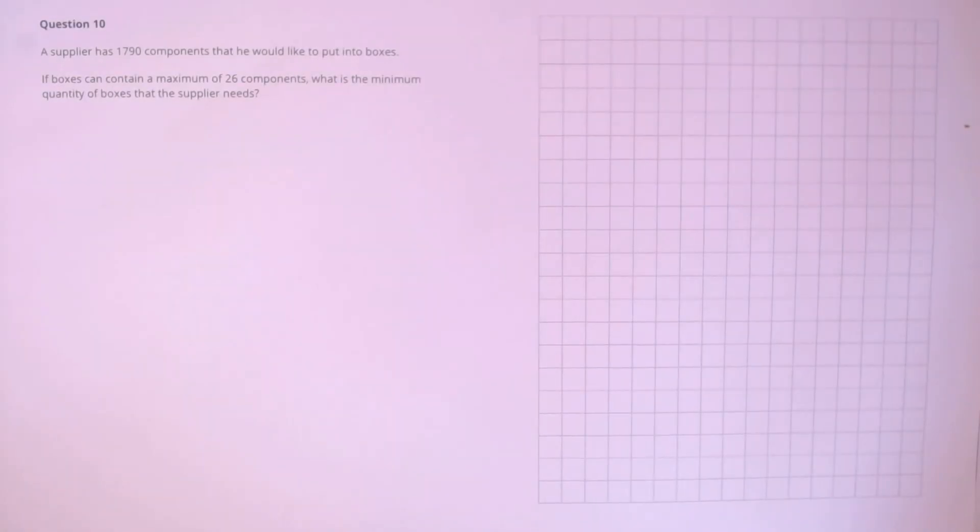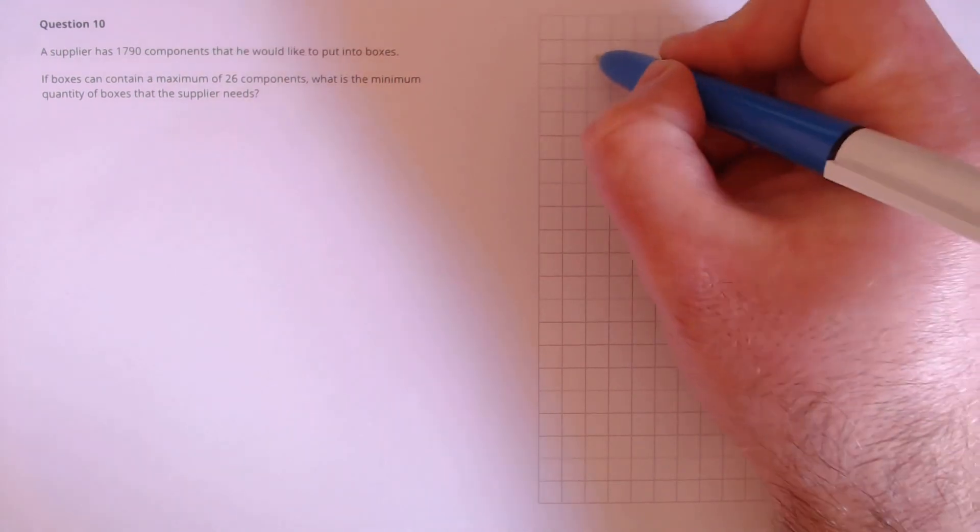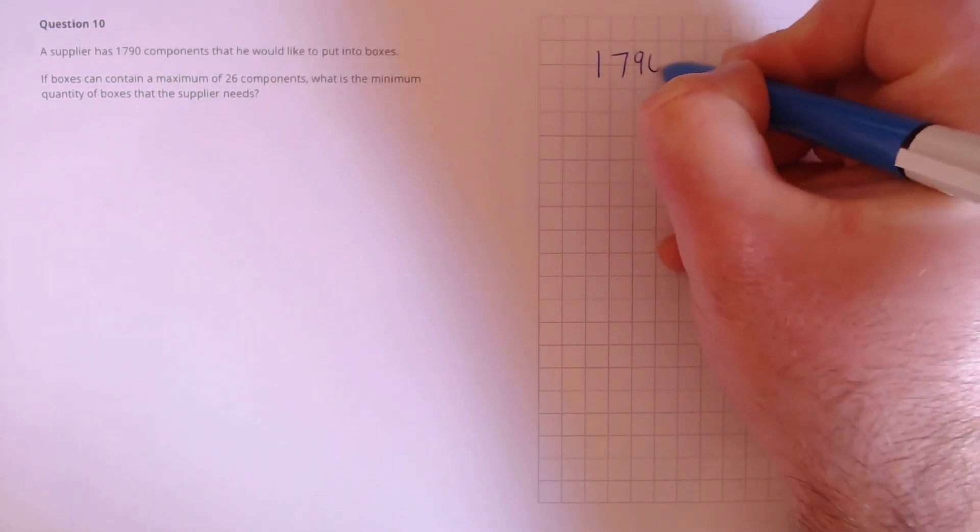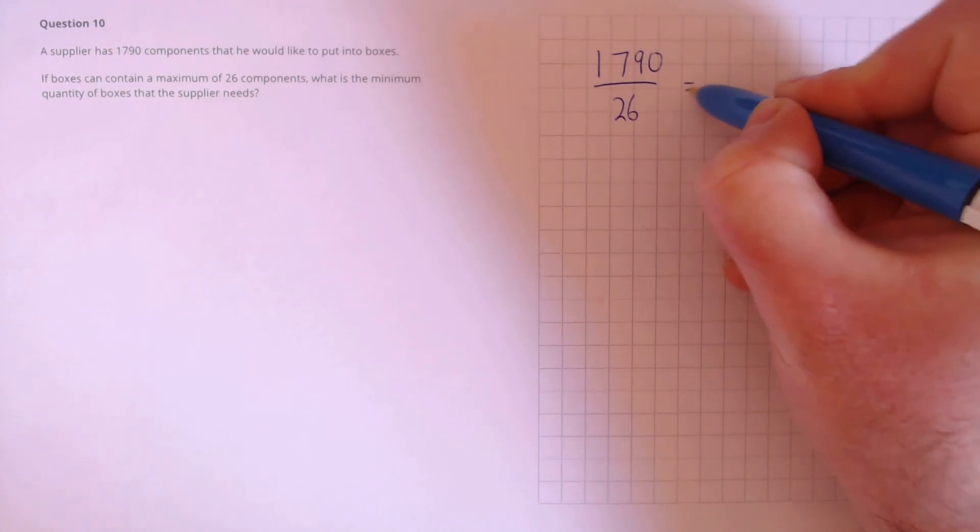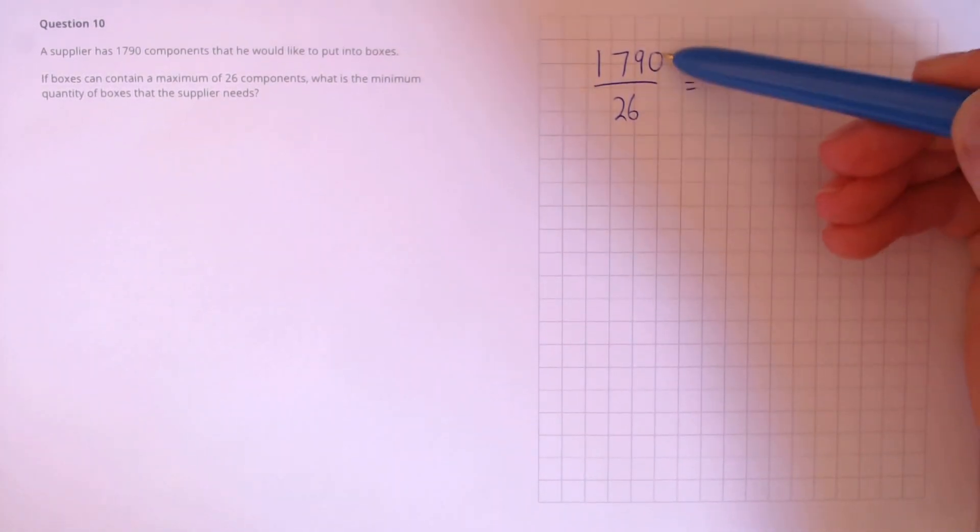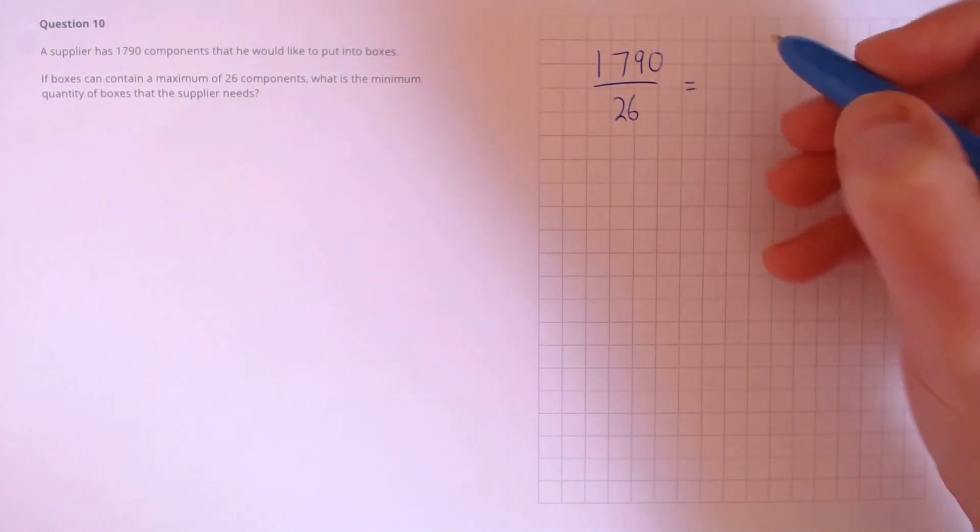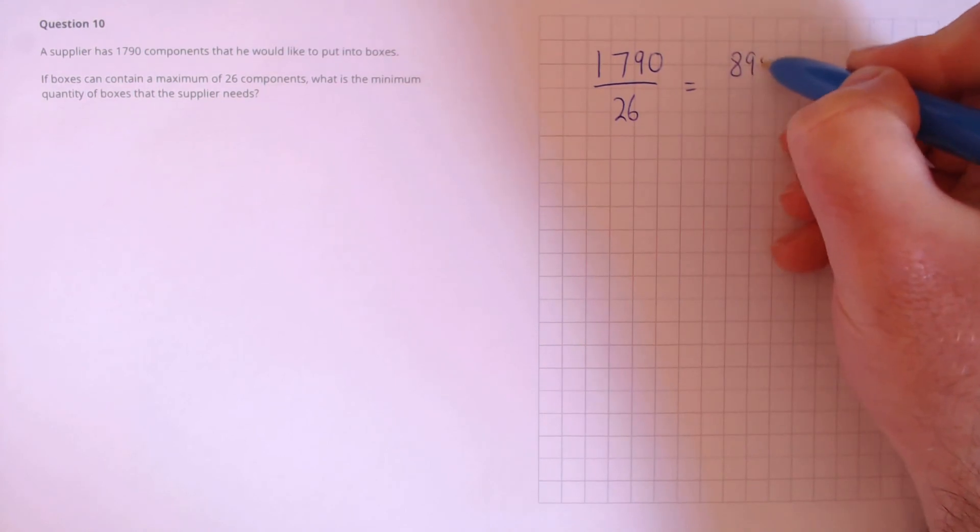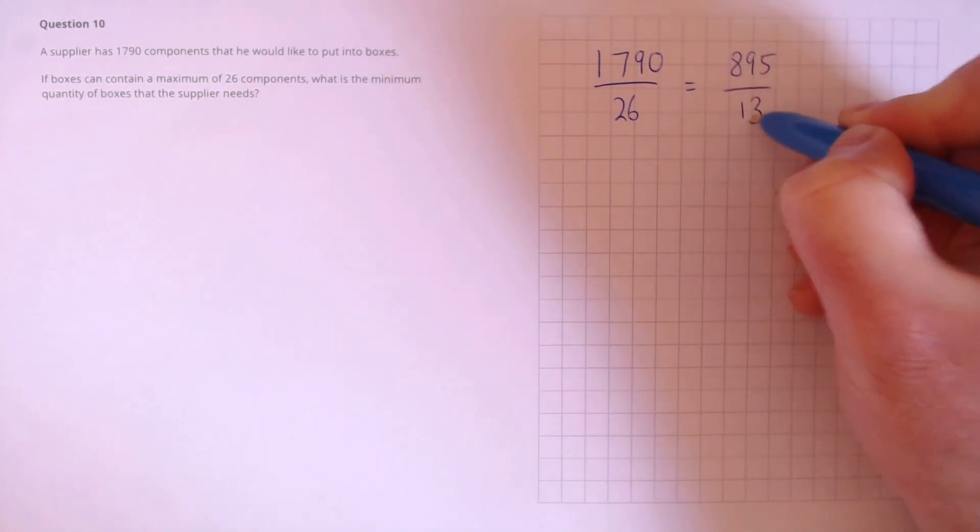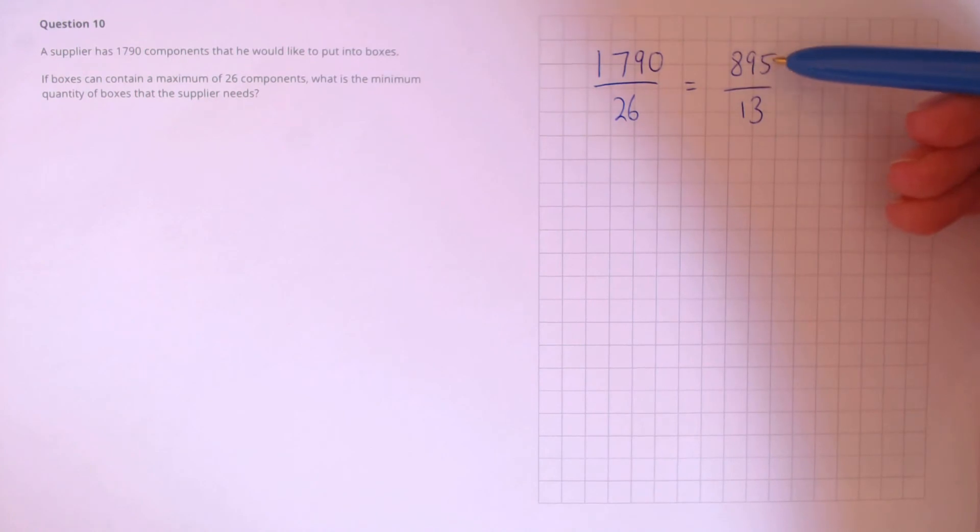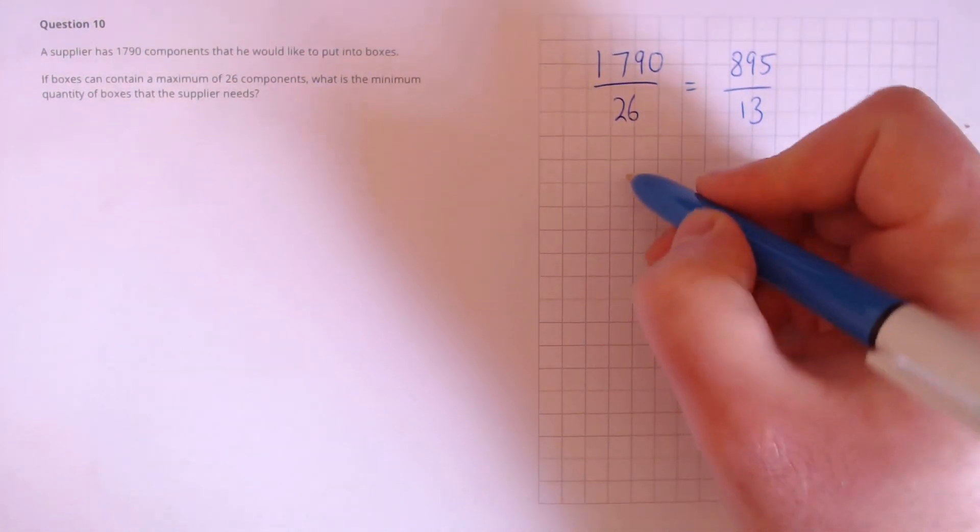Question 10. A supplier has 1,790 components that he would like to put into boxes. If boxes can contain a maximum of 26 components, what is the minimum quantity of boxes that the supplier needs? So, we need to divide 1,790 by 26. First, I notice that both of these can be divided by 2, so we can make a simplification first. That's 895 over 13. We used to do the division 895 divided by 13, so let's use our long division.